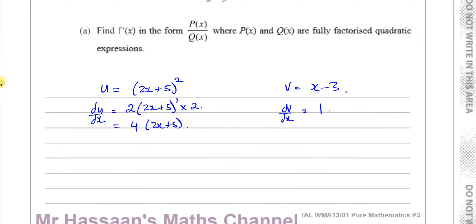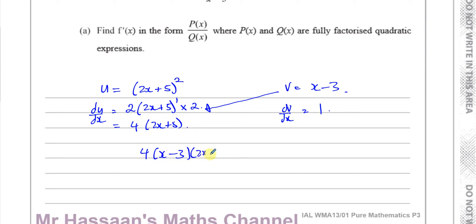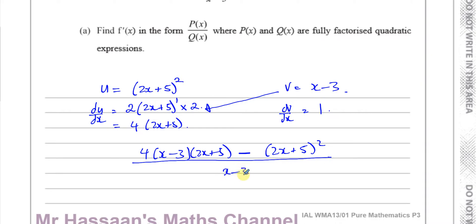The quotient rule is given in the formula book. I set out u and u-dash underneath, v and v-dash underneath. For the quotient rule, it's v times the derivative of u, minus u times the derivative of v, all over v squared. So I get 4 times (x minus 3)(2x plus 5), minus (2x plus 5) all squared, divided by (x minus 3) all squared.